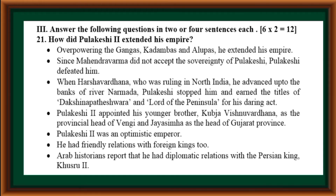Pulakeshi II appointed his younger brother Kupja Vishnuvardana as the provincial head of Vengi, and Jaisima as the head of Gujarat province. He was an optimistic emperor who had friendly relations with foreign kings. Arab historians report that he had diplomatic relations with the Persian king Khusrau II.